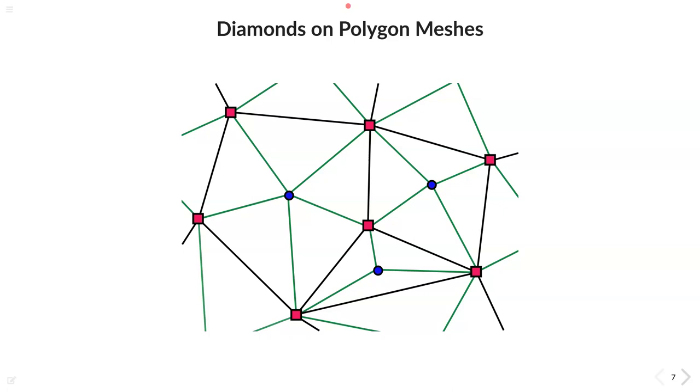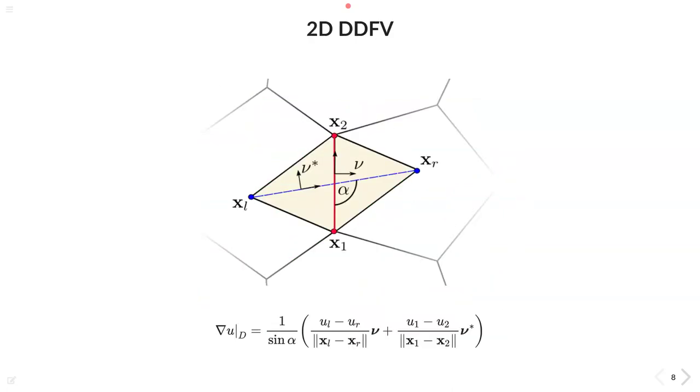But what to do with those diamonds? Well, the literature on DDFV provides really a lot of different derivations for the per diamond gradient. For example, this one is based on the primal dual axis nu and nu star, as well as their enclosed angle alpha. And while this construction is still quite easy to implement, we found an alternative formulation a tad more intuitive.